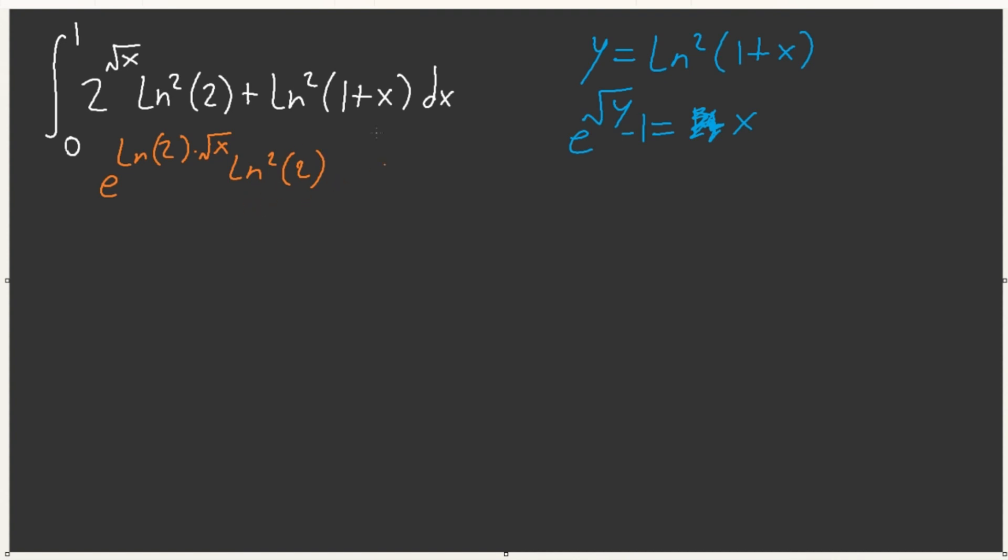Interesting. We want e to the square root of x minus 1, but we have something oddly different. So, what do we do here? We have to modify this somehow. Maybe we have to do some sort of a u substitution. Maybe that's where this ln square comes from. If I put ln of 2 inside of a square root so that I can do a u substitution with x for some constant, in this case, our constant is ln square of 2. And maybe that's why we have an ln square of 2 here. Got it.